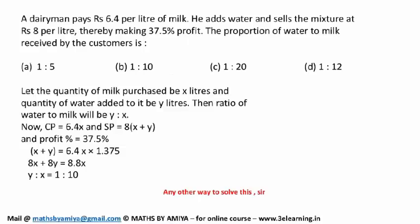Let the quantity of milk purchased be x litres, quantity of water added be y litres, then the ratio of water to milk be y to x. Now the cost price is this and this. He had taken the assumption of x and y and solved. At the bottom of this, any other way to solve this? He is looking for any other way, though this one is one of the best ways.